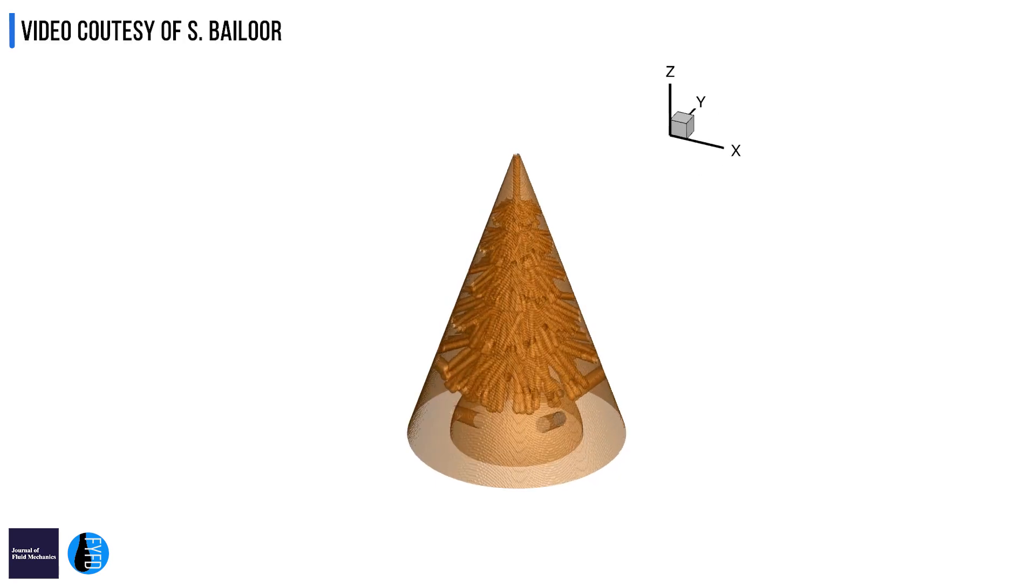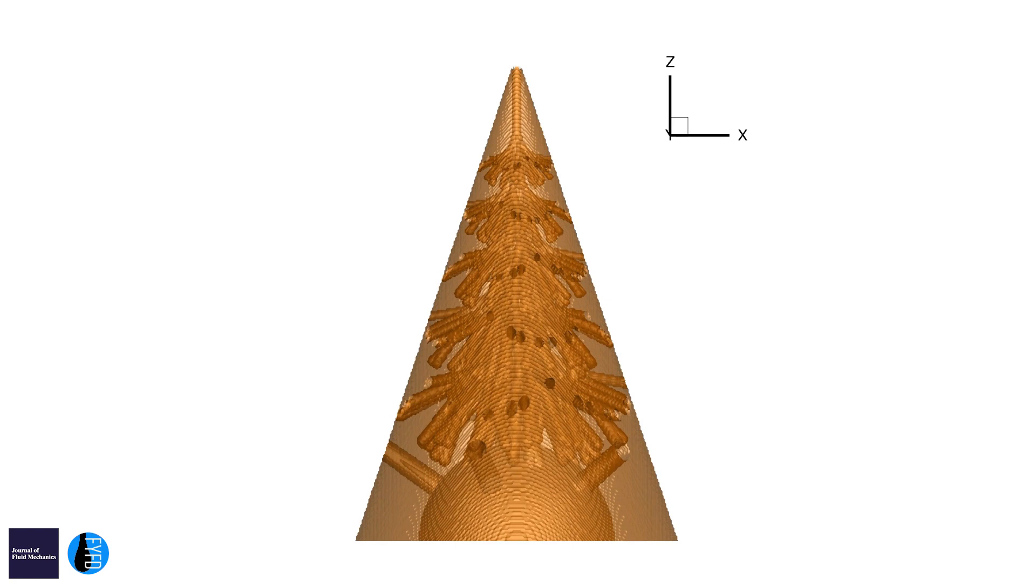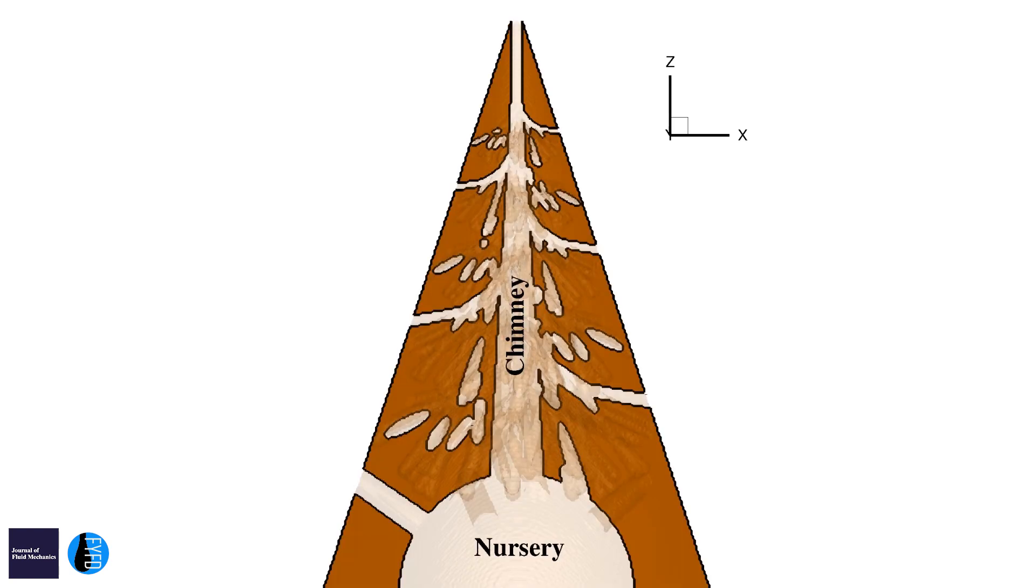But in termite mounds, it works in just the opposite way. There's air coming in through these surface ducts and these ducts merge into a central chimney. Inside the central chimney there's air also rising from the bottom, from the nursery where the termites reside.